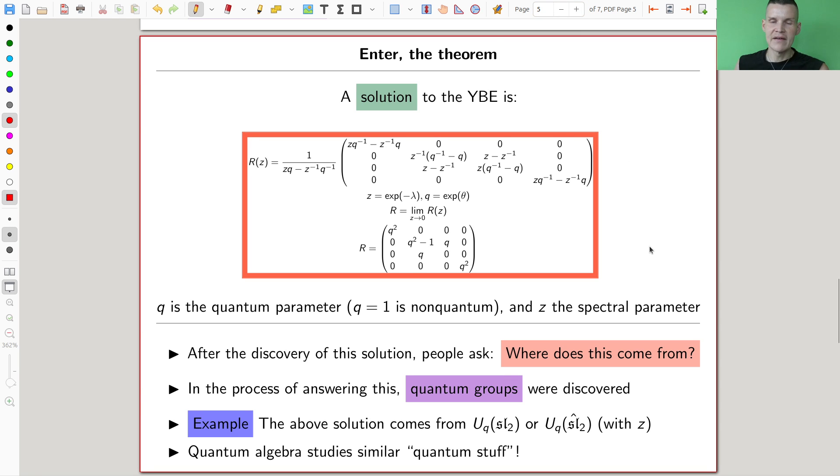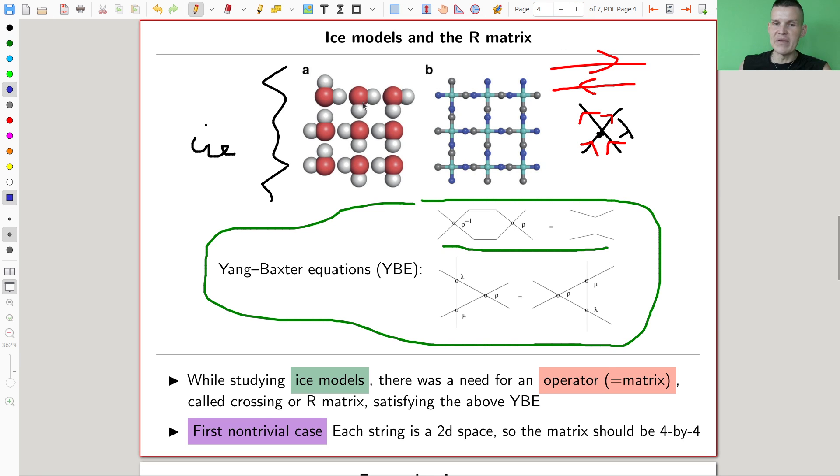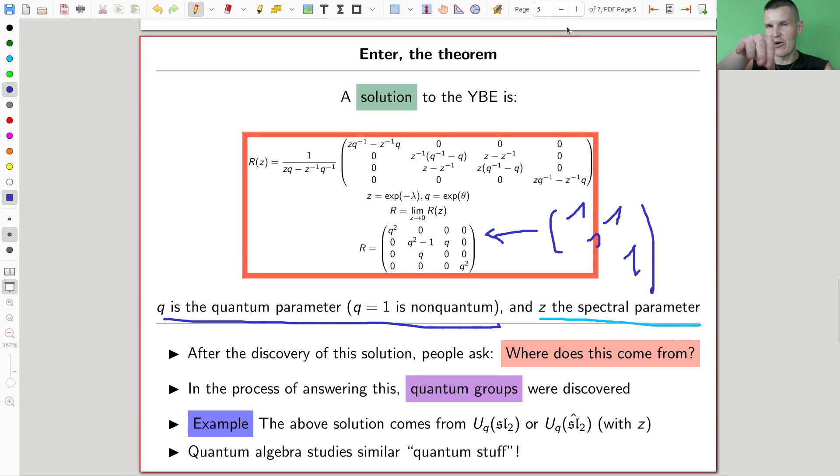In the easiest case, an attracting or repelling force for every edge. Two times two times two times two, that's 16. And that's why people were looking for a four-by-four matrix. And as soon as you have this four-by-four matrix, essentially, the story should be, you should be able to solve your corresponding lattice model. In this case, it's this ice-type model. So people were looking for this very hard, and they found a solution. The Fadeyev school found the following type of solution, with two parameters, a Z and a Q. The Z is usually called the spectral parameter, and the Q is usually called the quantum parameter.